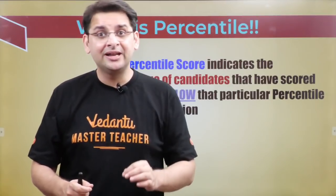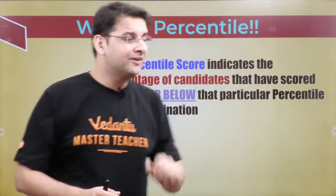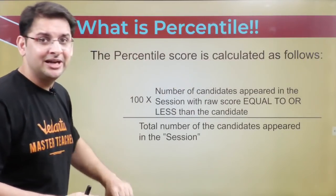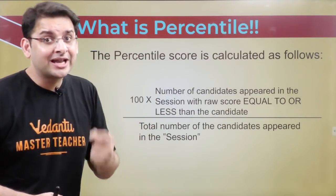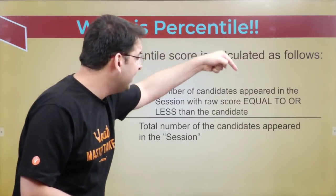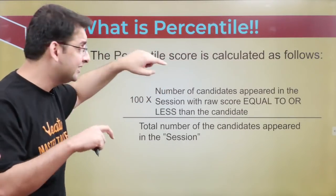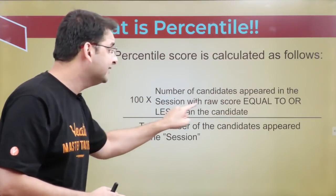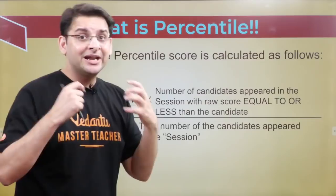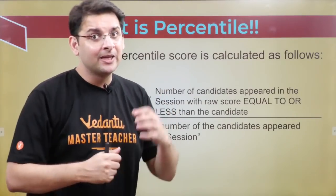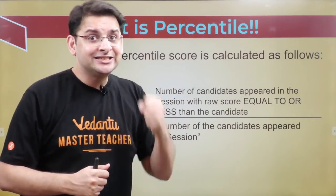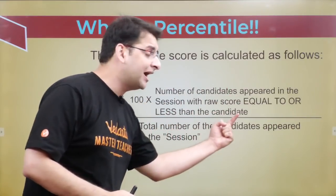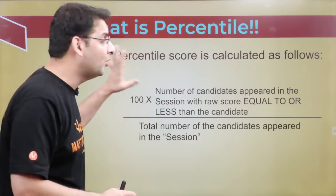So what is the percentile of a candidate? Let me give you an example to make things clear. The percentile formula is: the number of candidates in the session with a raw score equal to or less than that of the candidate, divided by the total number of candidates appeared in the session, multiplied by 100.